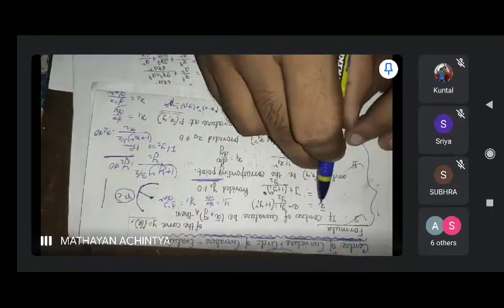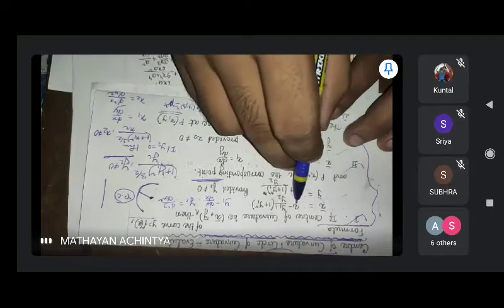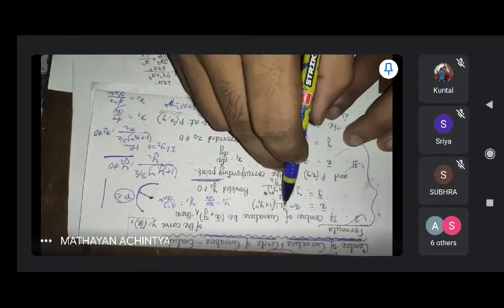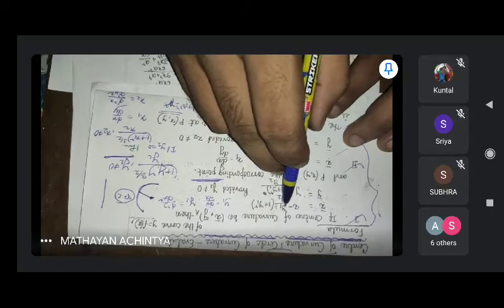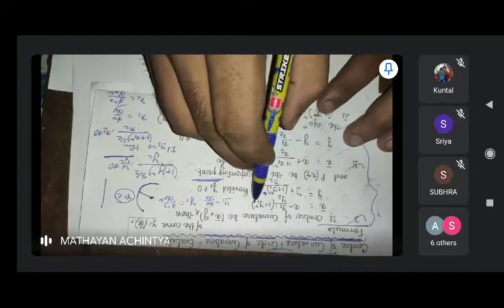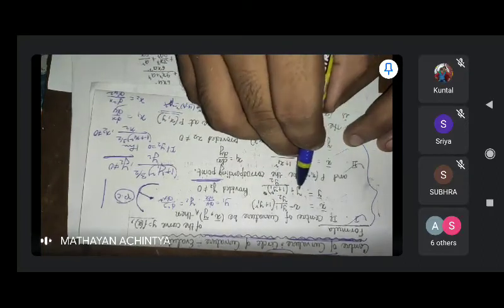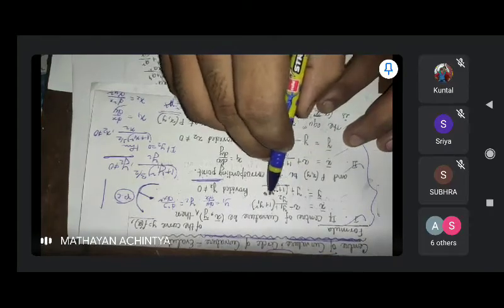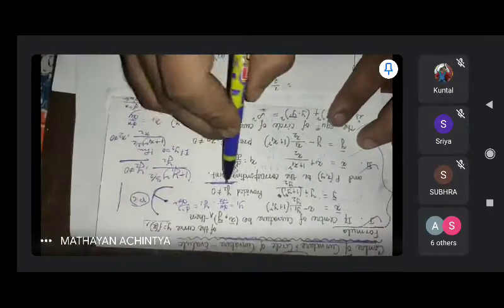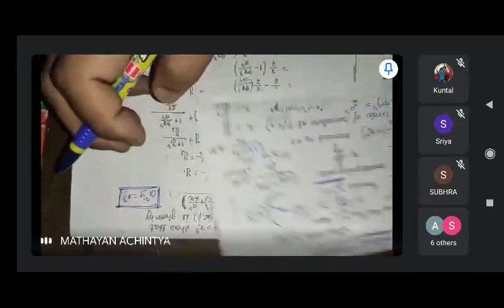The formula is x̄ = α = x - (y₁/y₂) × (1 + y₁²), and ȳ = β = y₁ + (1 + y₁²)/y₂, provided y₂ is not equal to zero. This is the formula we use.